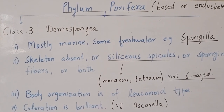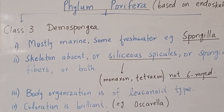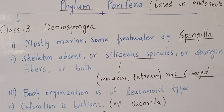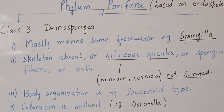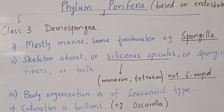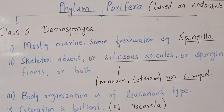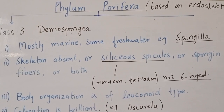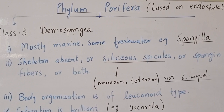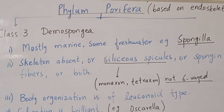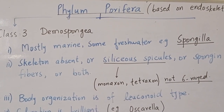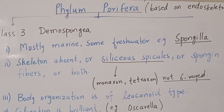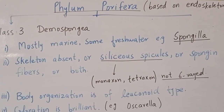The next class is Demospongia. Members of Demospongia are mostly marine, but some are found in freshwater. The well-known freshwater example is Spongilla, commonly known as the freshwater sponge. Regarding their skeleton, there is a variety of conditions: in some cases the skeleton is absent, in some cases siliceous spicules are present, in some spongin fibers are present, and in some cases both spicules and spongin fibers are present.